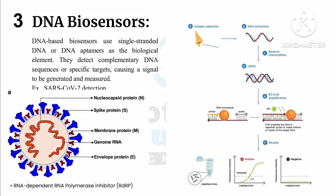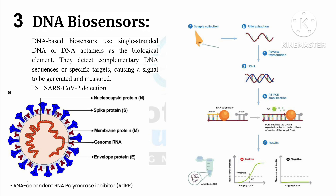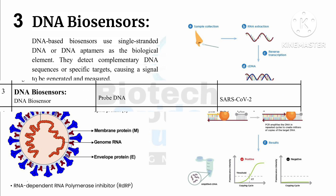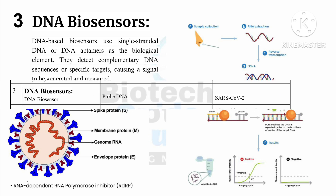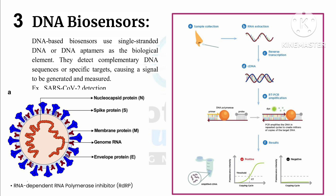Third, DNA biosensors. DNA-based biosensors use single-stranded DNA or DNA aptamers as the biological element. They detect complementary DNA sequences or specific targets, causing a signal to be generated and measured. An example is SARS-CoV-2 detection, where probe DNA is the biological recognition element and SARS-CoV-2 is the analyte. In this DNA biosensor, the mechanism involves the PCR process.